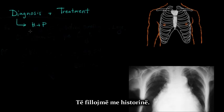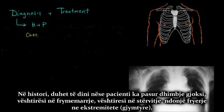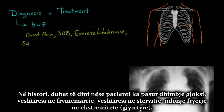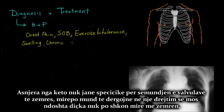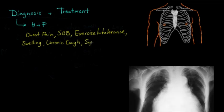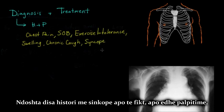Starting with history, you want to know if the patient has had any chest pain, any shortness of breath, any trouble with exercise or exercise intolerance, any swelling in their extremities, or a chronic cough. None of these are really specific for valvular heart disease, but they could all point you toward something going wrong with the heart. You also want to ask about any syncopal episodes or fainting, and any palpitations.